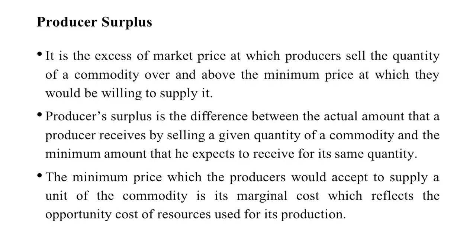Then we have producer surplus. This is one of the important concepts in a perfectly competitive market. It is the excess of the market price at which producers sell the quantity of a commodity over and above the minimum price at which they would actually be willing to supply it. There are two concepts here: at what price the seller is willing to supply and what he actually receives for selling the product.